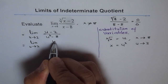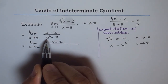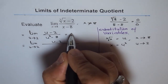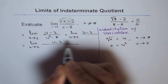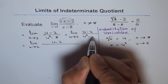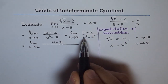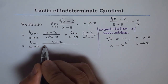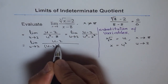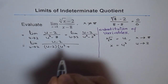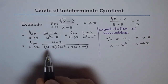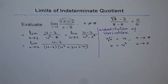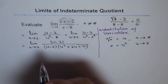So we will factor and see what we get. We can write this as limit as u approaches 2 of u minus 2 over u cubed minus 2 cubed. Factoring the difference of cubes, the denominator becomes u minus 2 times u squared plus 2u plus 4. As you can see, u minus 2 is a factor in the denominator and also in the numerator.